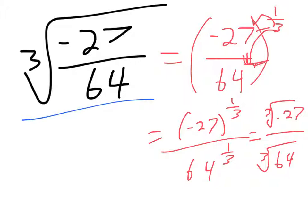So what you could have done to begin with is say, okay, I have a radical. I can make that radical apply to everything on the inside. This is going to be cube root negative 27 over cube root 64.